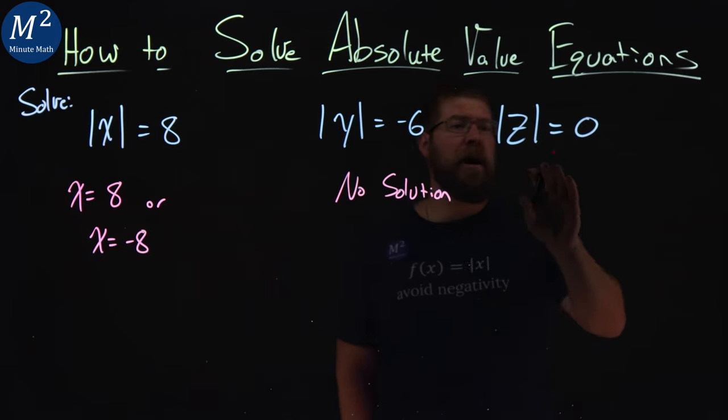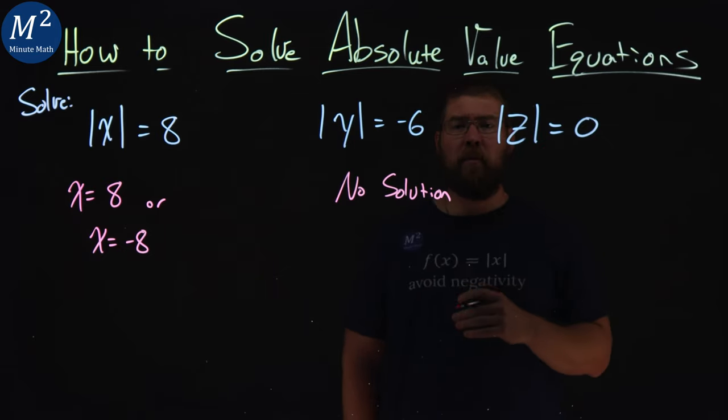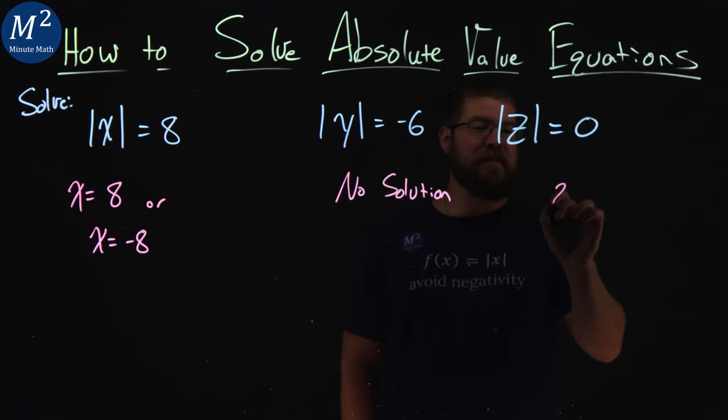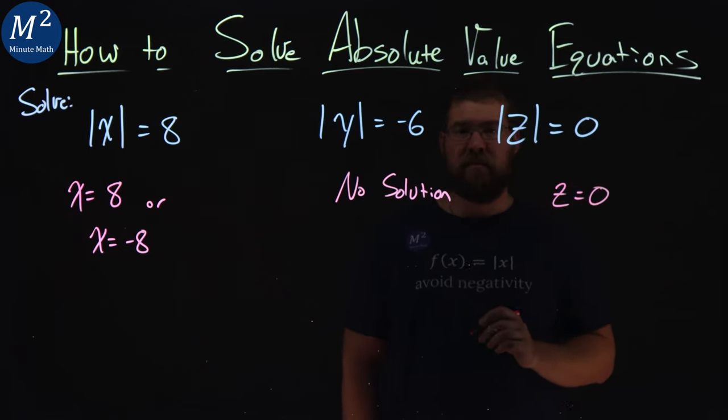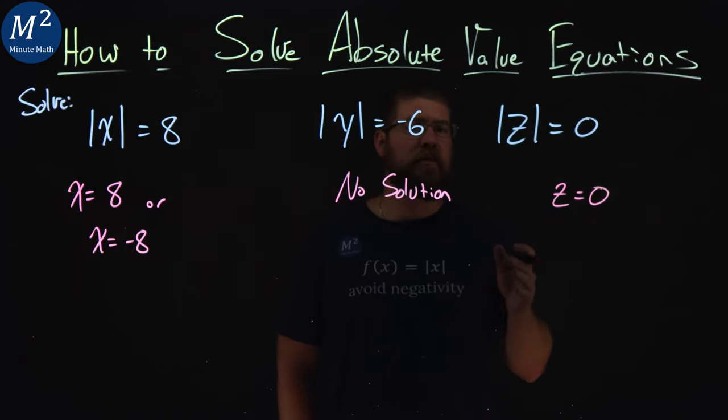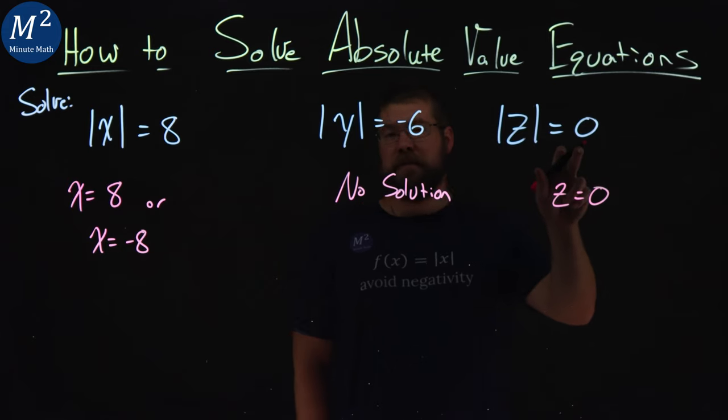Lastly, the absolute value of Z is equal to zero. What value makes that true? That's just going to be Z equals zero. There's no positive or negative here. It's just Z equals zero. That's our only option. We take the absolute value of it, we get zero.